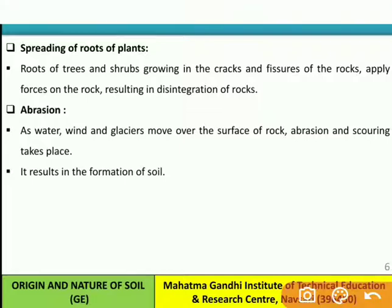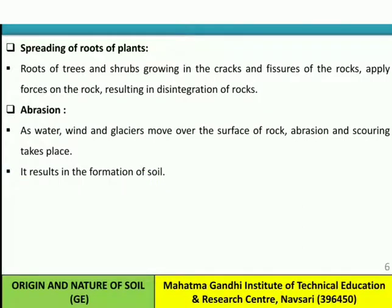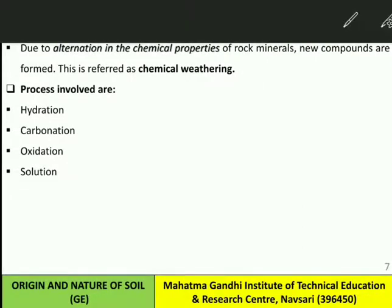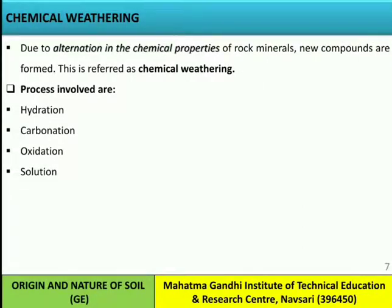The fourth factor is abrasion. As water, wind, and glaciers move over the surface of rock, abrasion and scouring take place, resulting in the formation of soil. Whenever water, wind, or glaciers move over the surface of rocks, the rock gets eroded and ultimately creates soil formation. These were the four factors responsible for physical weathering.